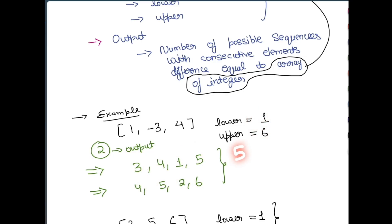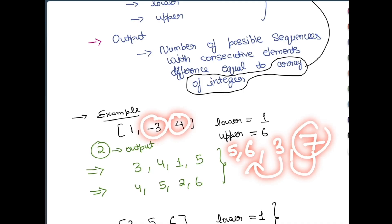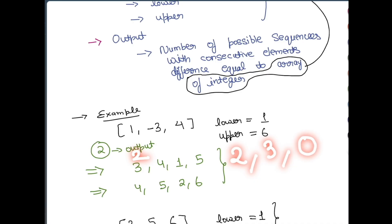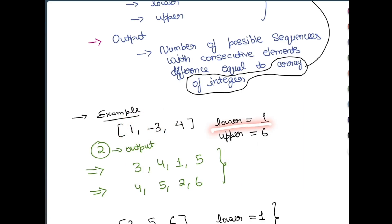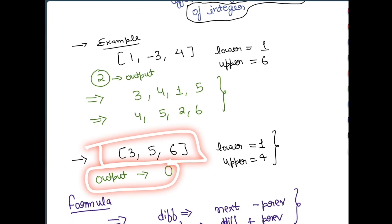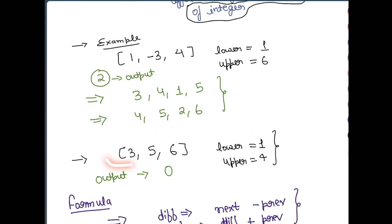For example, starting with 5: the next element must be 6, then 3, then 7 — but 7 is outside the range, so we cannot start with 5. Starting with 2: we get [2, 3, 0, 4], but 0 is less than the lower bound of 1. So 2 is also invalid. If no valid sequence exists the output is 0.